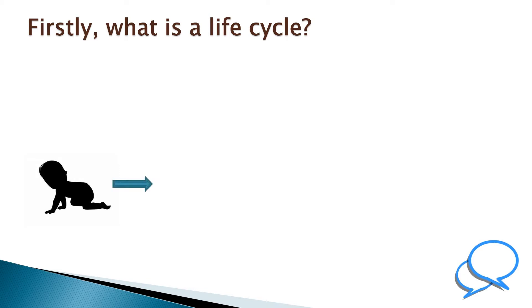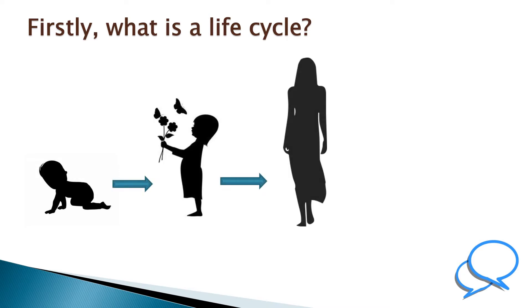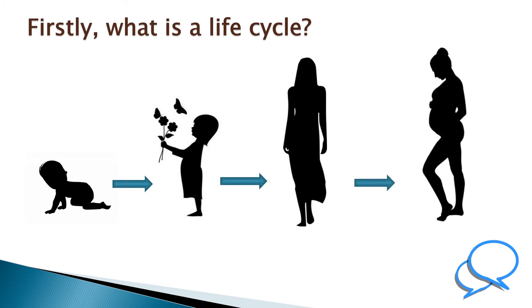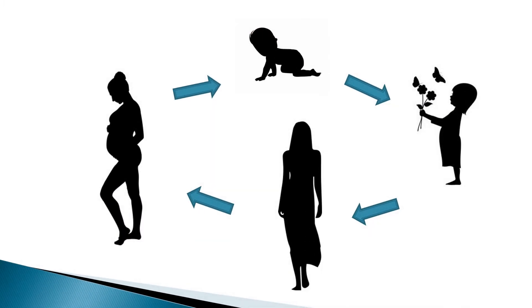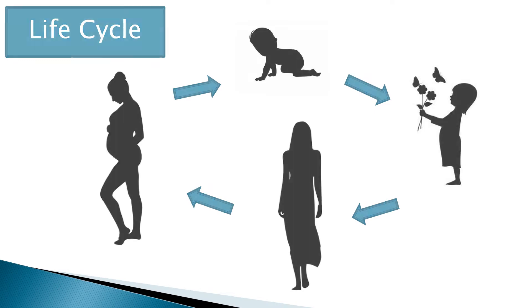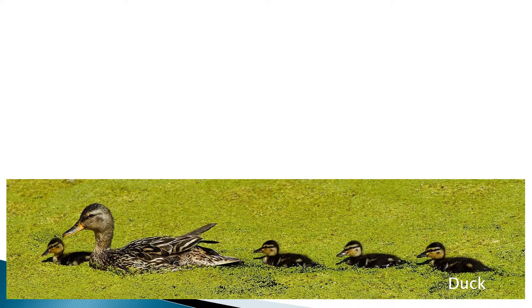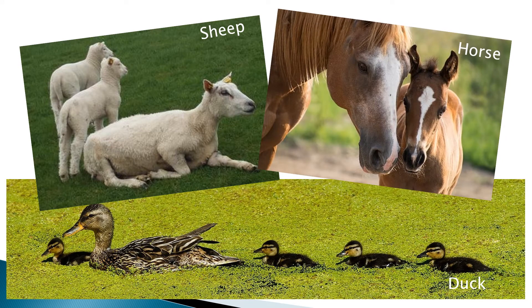All animals including humans are born. They grow and most often reproduce to have young of their own. This is known as a life cycle. It is important for animals and humans to produce their young so their species survive.